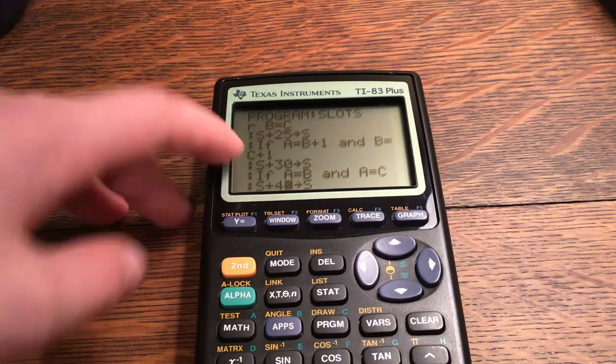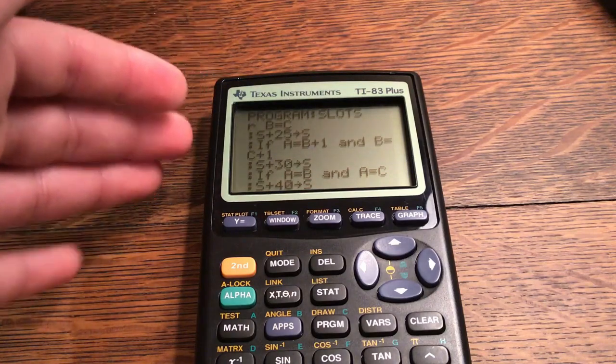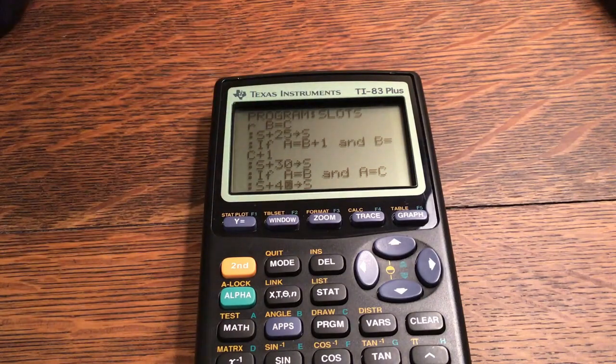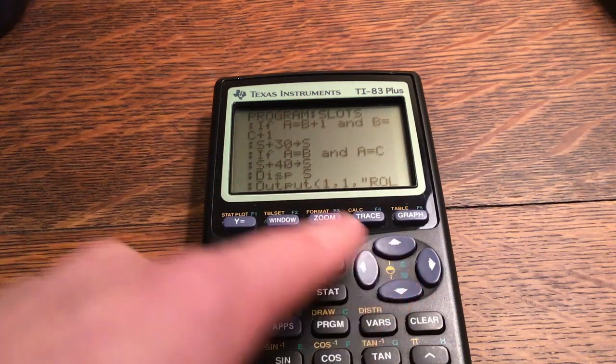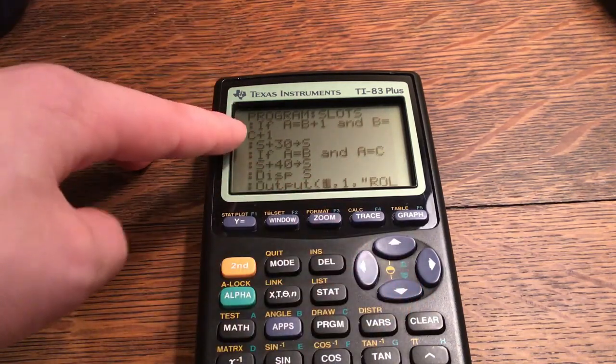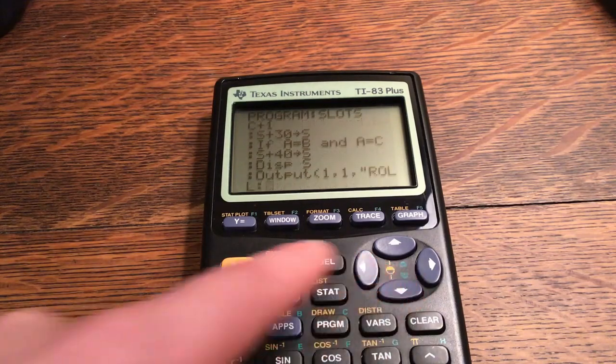So this is saying if it's like a one one one, or a two two two, or anything, it can even be a seven seven seven or eight eight eight, whatever. This is all three numbers are the same, you get 40 points. And you would also get the 25 here too because two of them match.